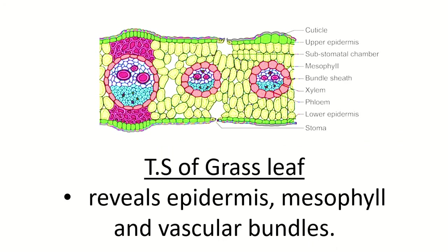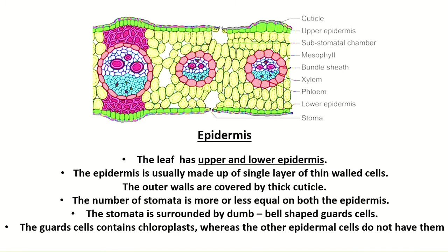The transverse section of the grass leaf reveals regions like epidermis, mesophyll, and vascular bundle. The complete structure of the grass leaf includes parts like cuticle, upper epidermis, sub-stomatal chamber, mesophyll, bundle sheath, xylem, phloem — that is the vascular bundle — and lower epidermis, which has the stomata. We are going to see the arrangement of these parts in detail, starting with the epidermis.